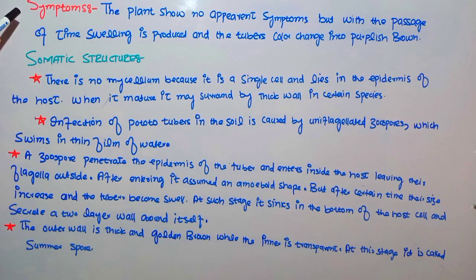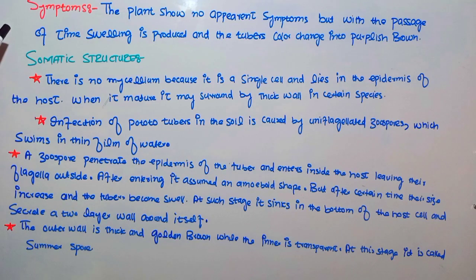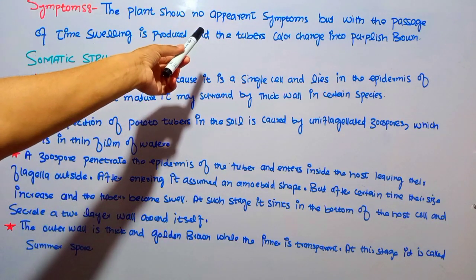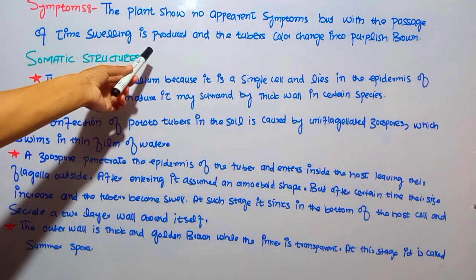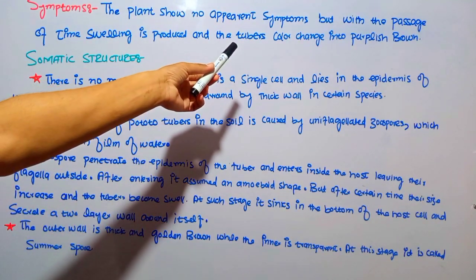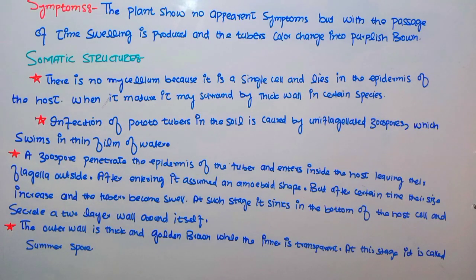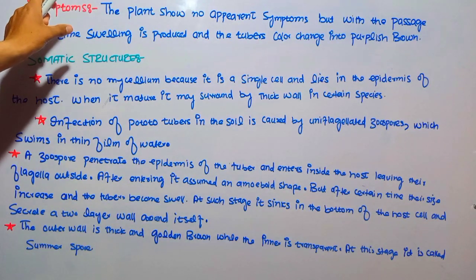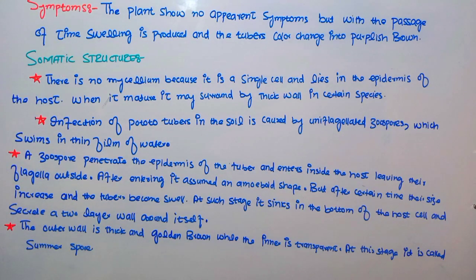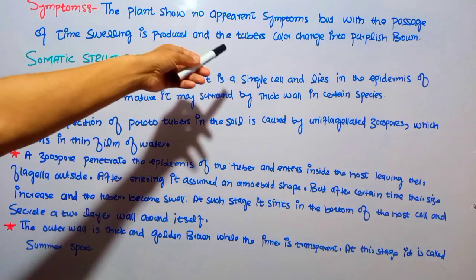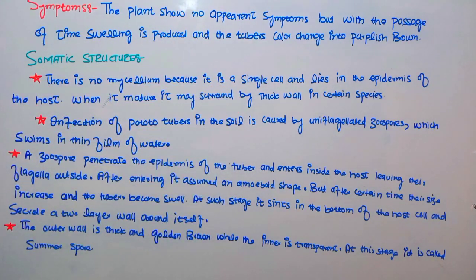Now we are going towards the symptoms. Symptoms are the signs that a diseased plant shows. The plant shows no apparent symptoms initially, but with the passage of time, swelling is produced and the tuber's color changes to purplish-brown or black, which is why it is called black wart disease.